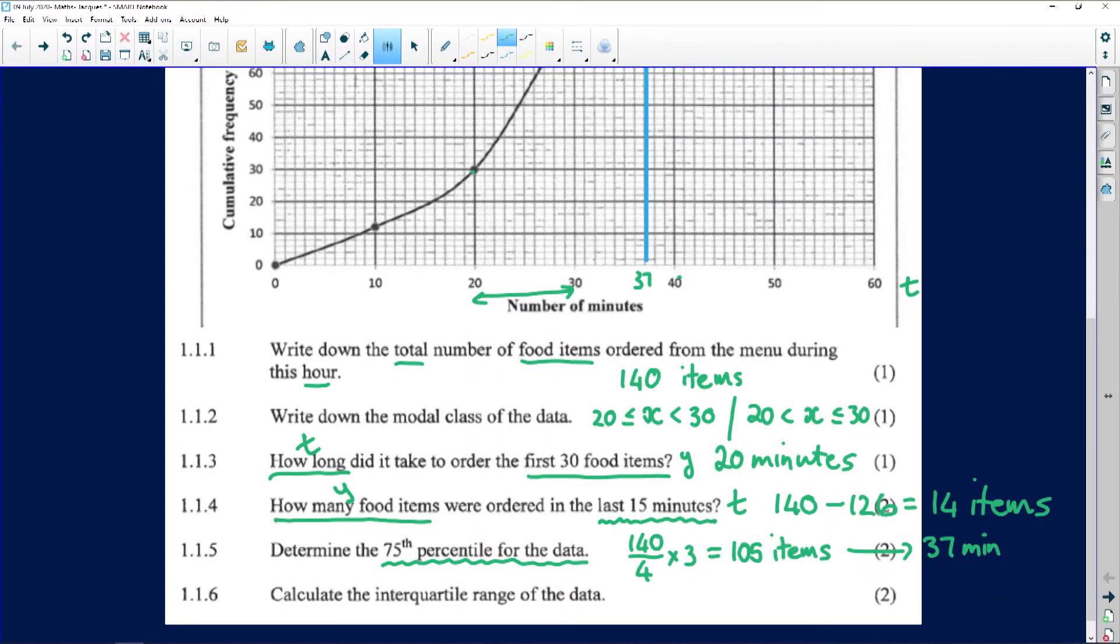So you can see the calculation is not that difficult, folks. It's just three quarters of 140 brings us to 105. I go to 105. You must realize all the time this is a Y value and we were looking for a T value. So you didn't stop here. That's why there's two marks allocated to this question. The next part says, calculate the interquartile range of this data.